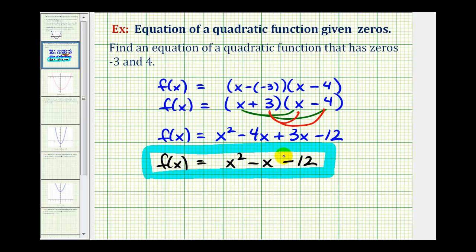I do want to make one more quick comment about what would happen if we did place a constant here in the front. Let's just say, for example, we'll have the constant equal three. Another possible quadratic function would be f(x) equals three times our two known factors of x plus 3 and x minus 4.